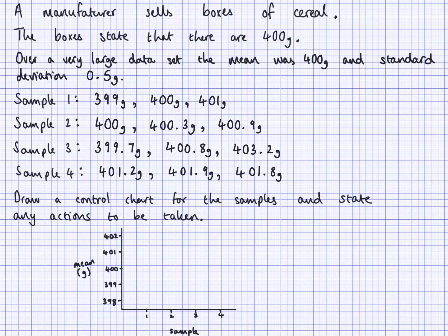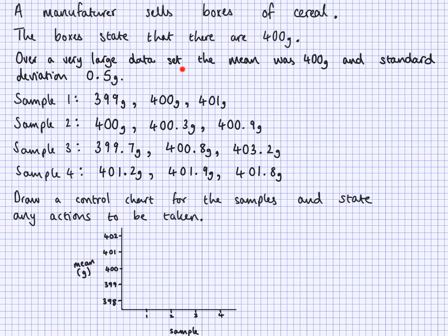Continuing with the same context: a manufacturer sells boxes of cereal, the boxes state 400 grams. This 400 grams is our target value. Over a very large data set, the mean was 400 grams — and this is a different 400 grams. The target value is what the box states. Over a very large data set, the mean was 400 grams and the standard deviation is 0.5. We're going to use this mean and standard deviation to work out our limits.